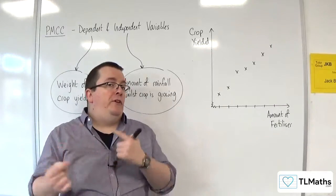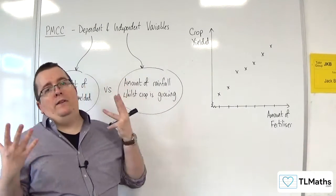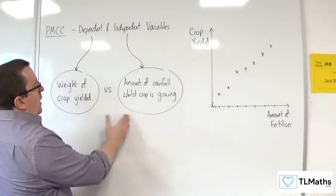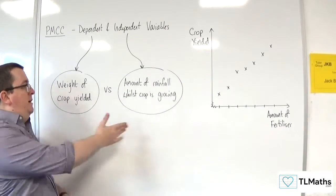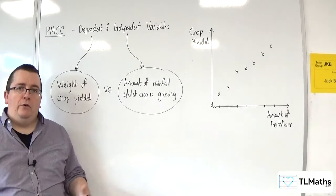So different situations call for a control variable to be used, whereas in other situations, when you're just looking at two random variables, then a control variable isn't involved.